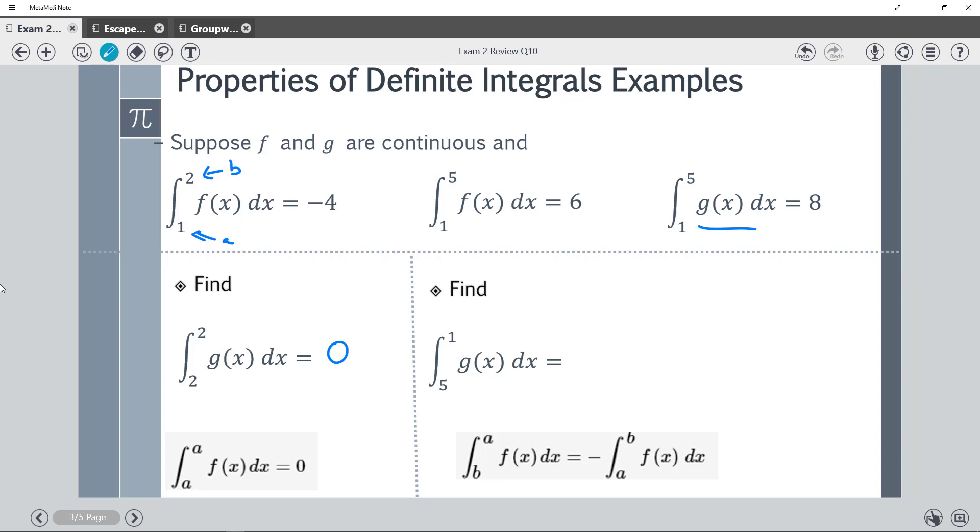If we want to look at g(x), so we're looking right here. But notice our a and b flipped, that becomes the negative. So now the negative of 5 to 1 g(x)dx, in this case just simply becomes the negative of the value 8.